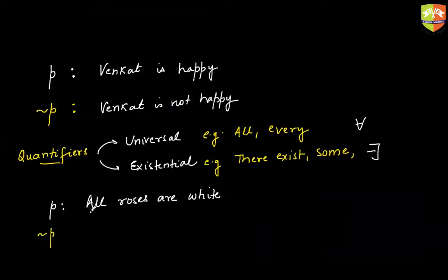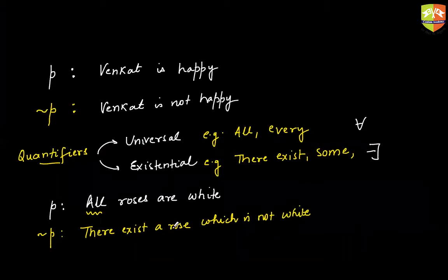So when you have a universal quantifier, remember its negation will start with or will contain an existential quantifier. So you can say there exists a rose which is not white. Or you can say it in various ways. Some roses are not white. Not every rose is white. Not all roses are white. Are you getting my point? So please note that never say the negation of a statement containing a universal quantifier like this. All roses are white. Don't say all roses are not white. Why sir? If you say all roses are not white, it will be marked wrong.